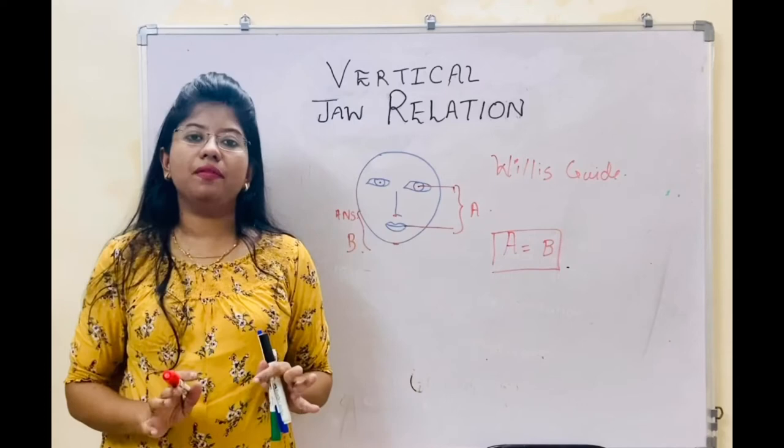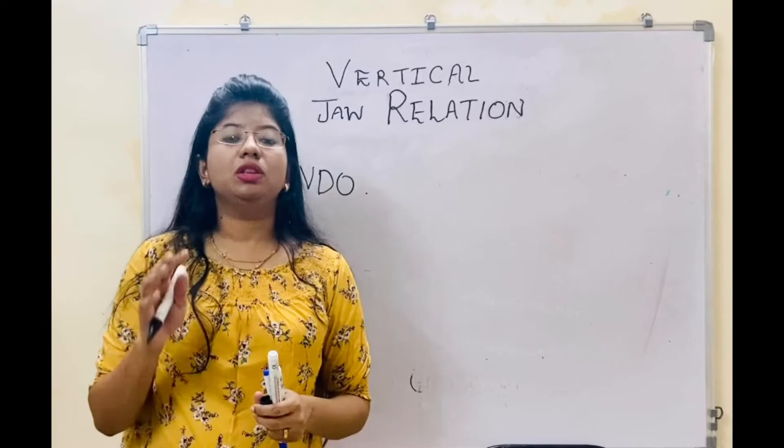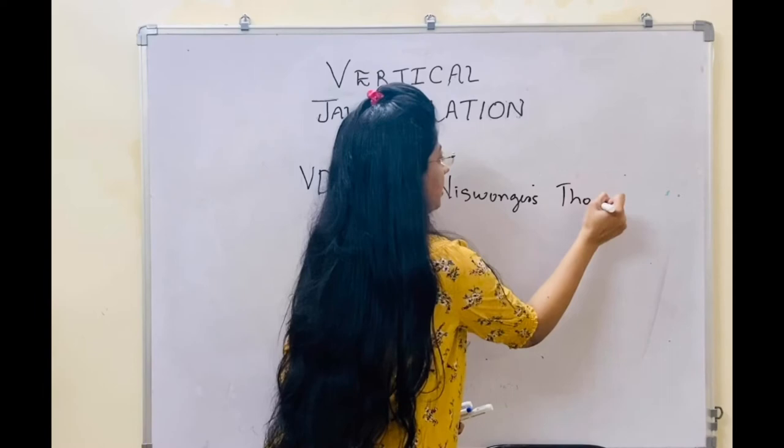Now we have to record the vertical dimension at occlusion. There are two types of methods: mechanical methods as well as physiological methods. The most commonly followed one is the Niswonger's method, and there is also Thompson's method.